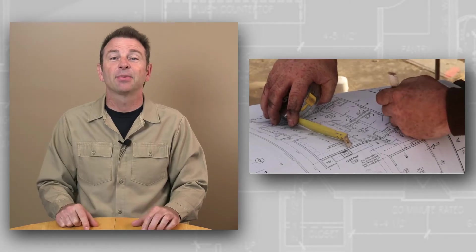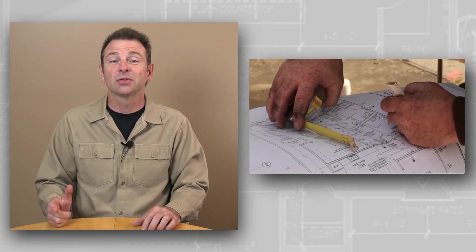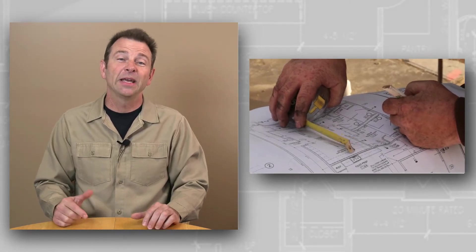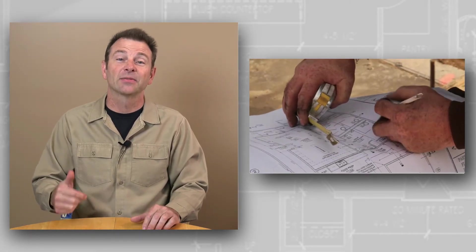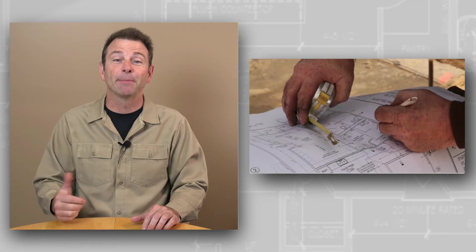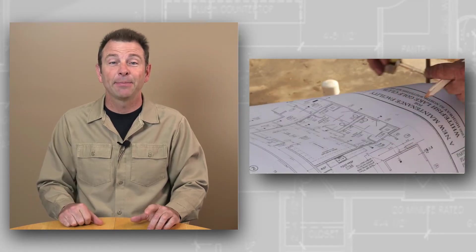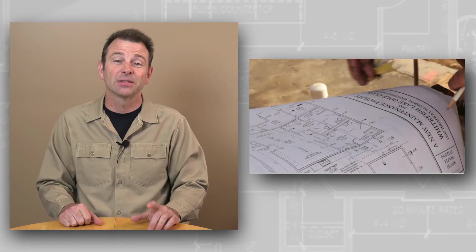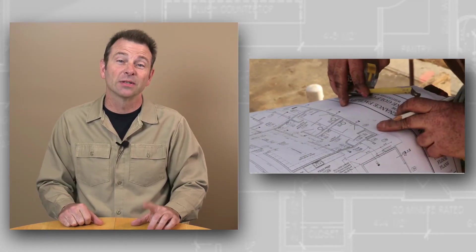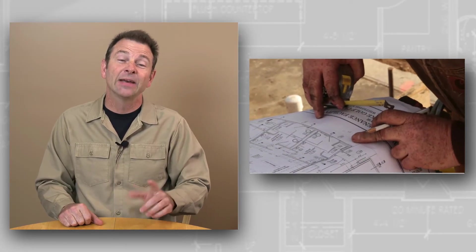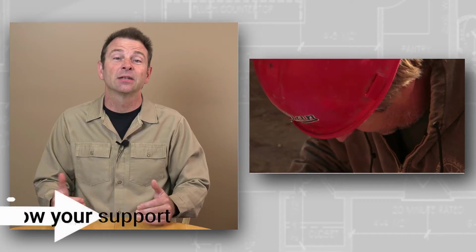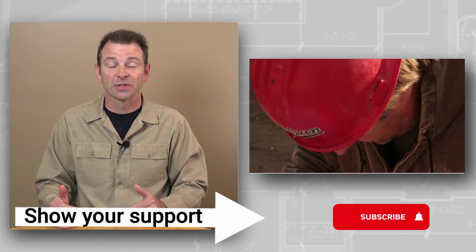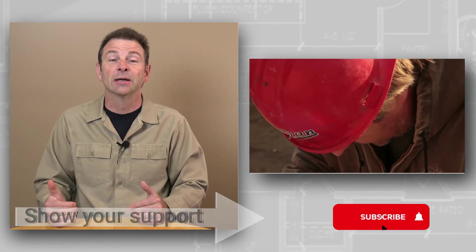An example of unit conversions would be if we're trying to calculate the volume of concrete to be poured on site. Typically our measurements are going to be in feet and inches and we're going to have to convert these to something that makes more sense for concrete.